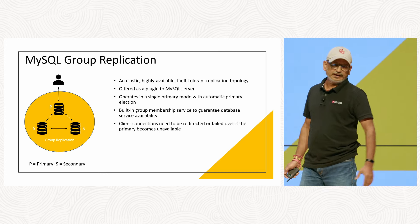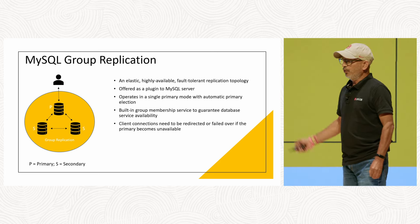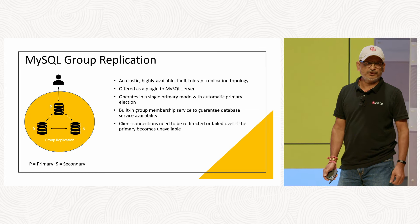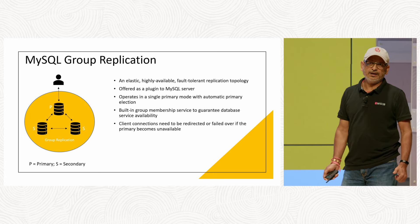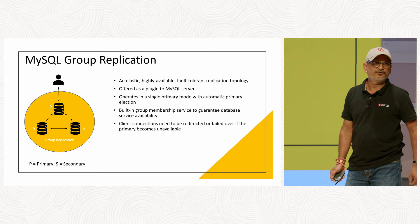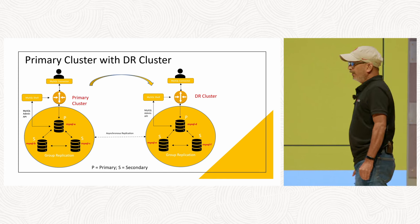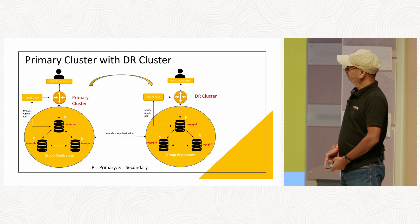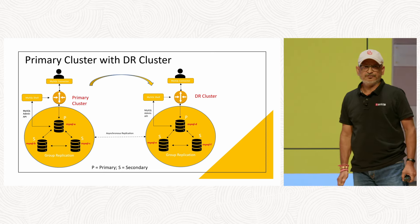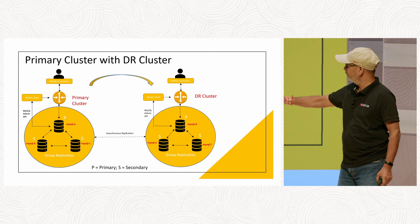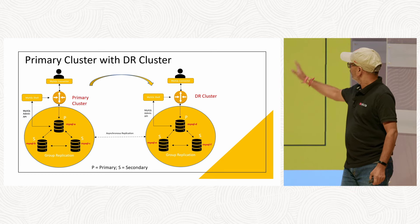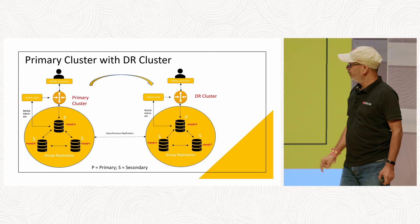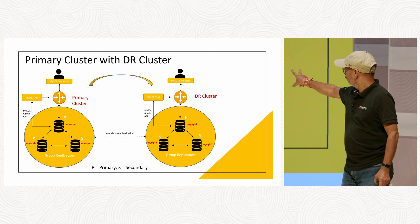The client has to reconnect once again when something goes wrong for the primary. To overcome this, MySQL has introduced two components: shell and router. With shell and router you can overcome this disadvantage. Today we are doing a short demo covering two to three failure scenarios. On the left-hand side we have a primary cluster with three servers — one primary and two secondary — running group replication. On the right-hand side we have a DR cluster, also based on group replication with one primary and two secondary machines.